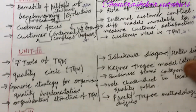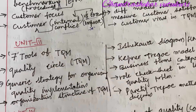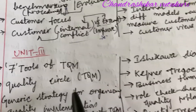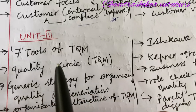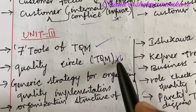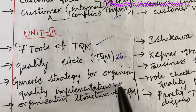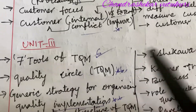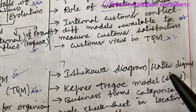This is all about 5AB and 4AB. Unit 3 is a bit lengthy in its structure. If you want, you can skip it at the last moment if you are just looking to pass. For the benefit of other students, Unit 3 is also covered. The seven tools of TQM and quality circle is the topmost question, and the generic strategy for organizing quality implementation is also the topmost question.